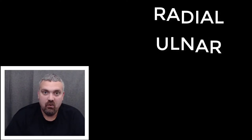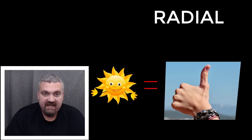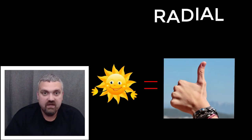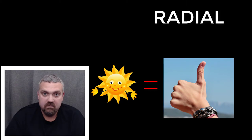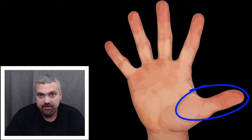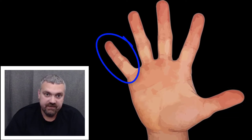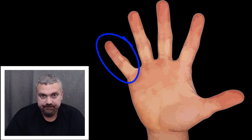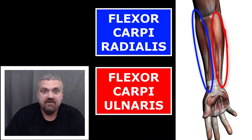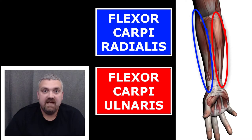Radial versus ulnar. Just remember that the radius is always on the thumb side of your forearm, whichever position your hand is in. When you think radial, think thumb side of the forearm. Ulnar — think ulnar side, or pinky finger side of the forearm. Key examples here would be flexor carpi radialis and flexor carpi ulnaris.